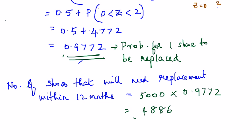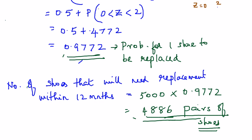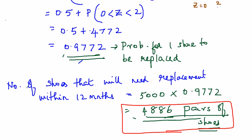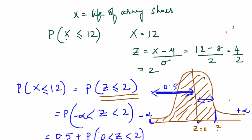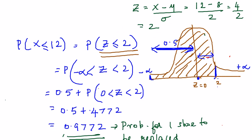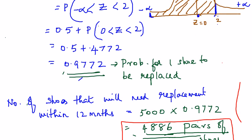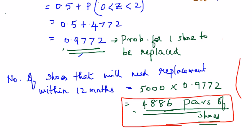The answer is 4886 pairs of shoes — do not forget to include the unit. That's all for 10 marks. It's a very simple sum: find the value of z from x, find the area for that z value, and the only difference here is that you multiply the probability for one single shoe by 5000, the total number of shoes issued. Don't forget to write the units.